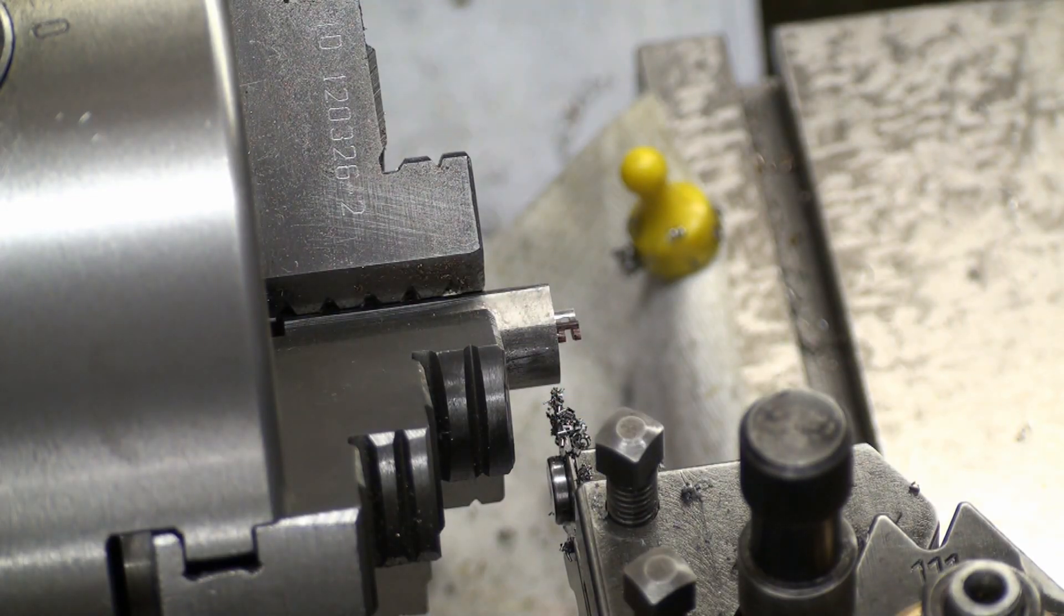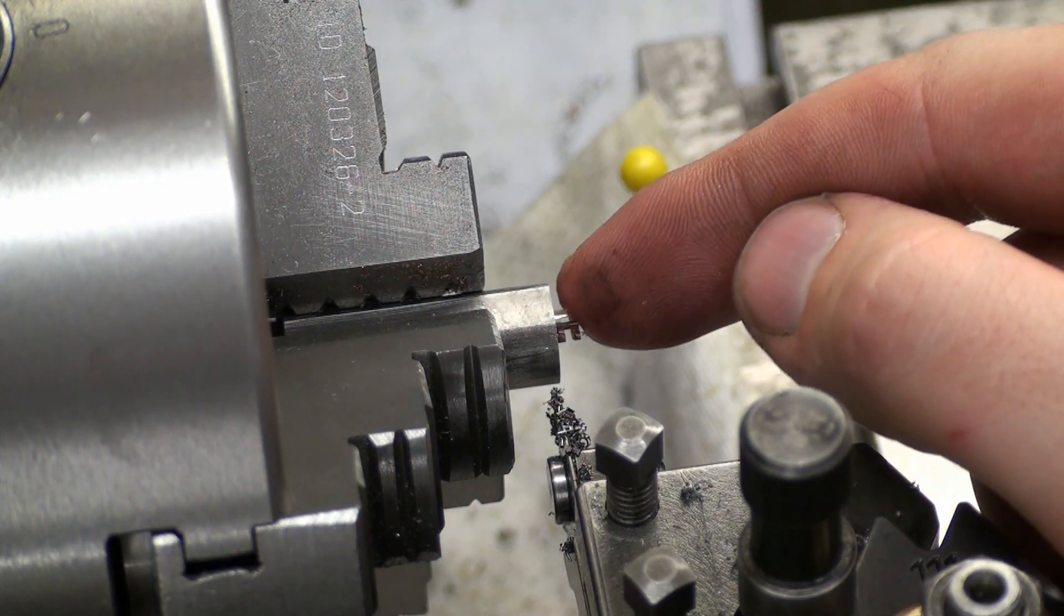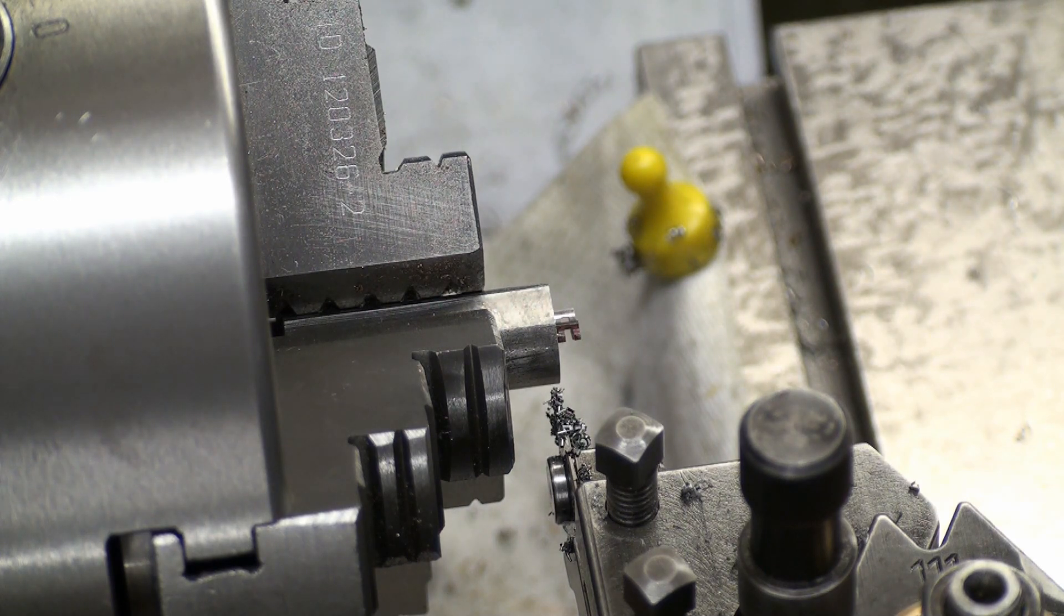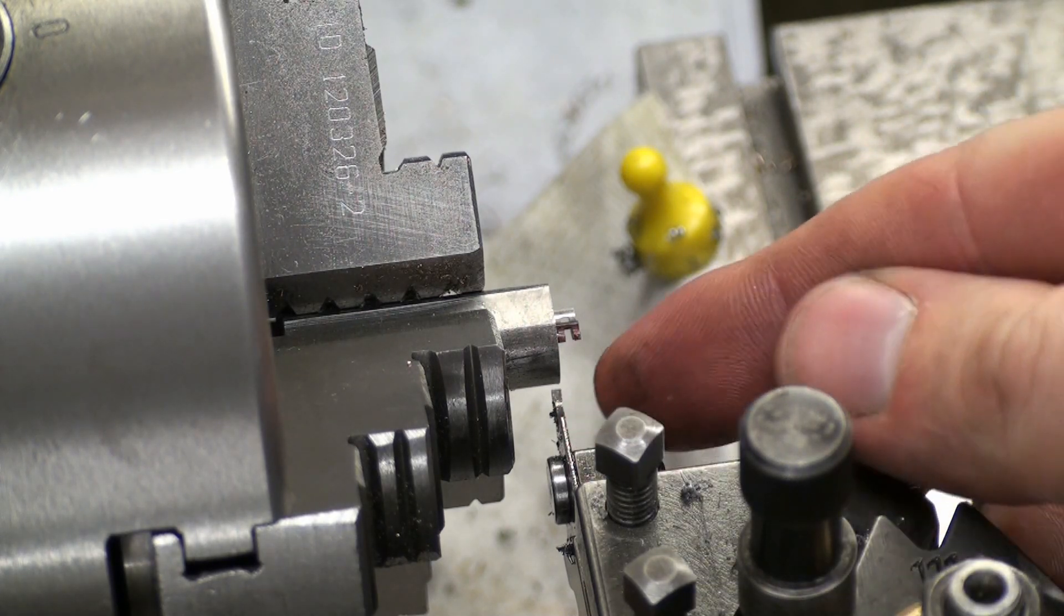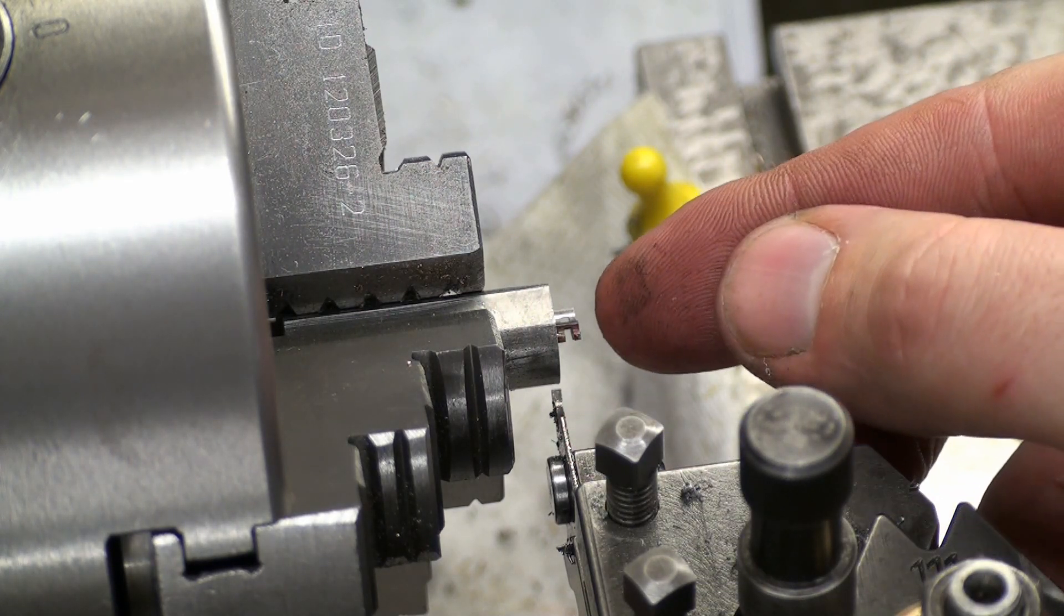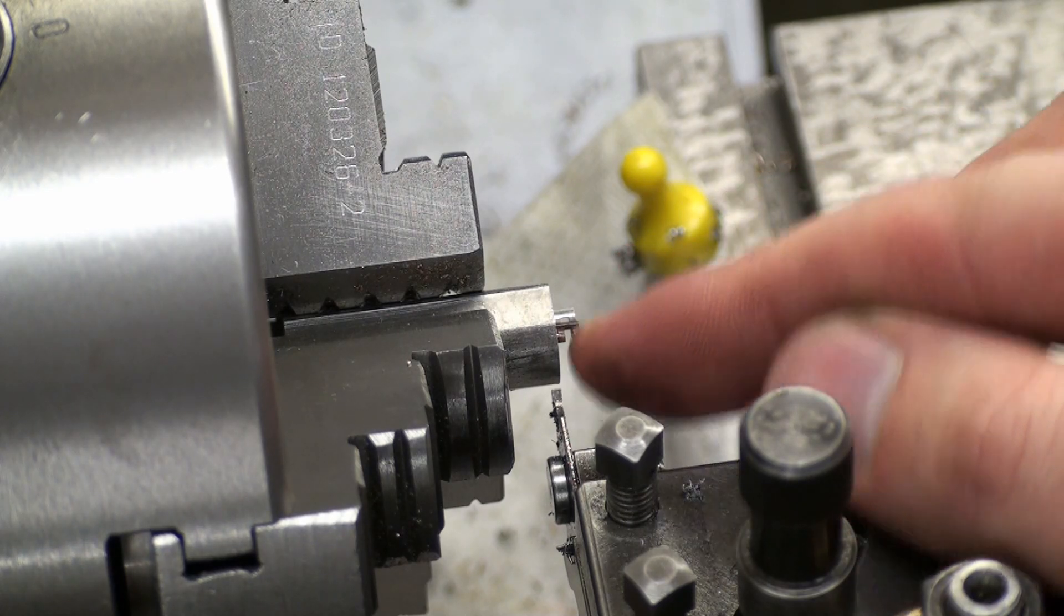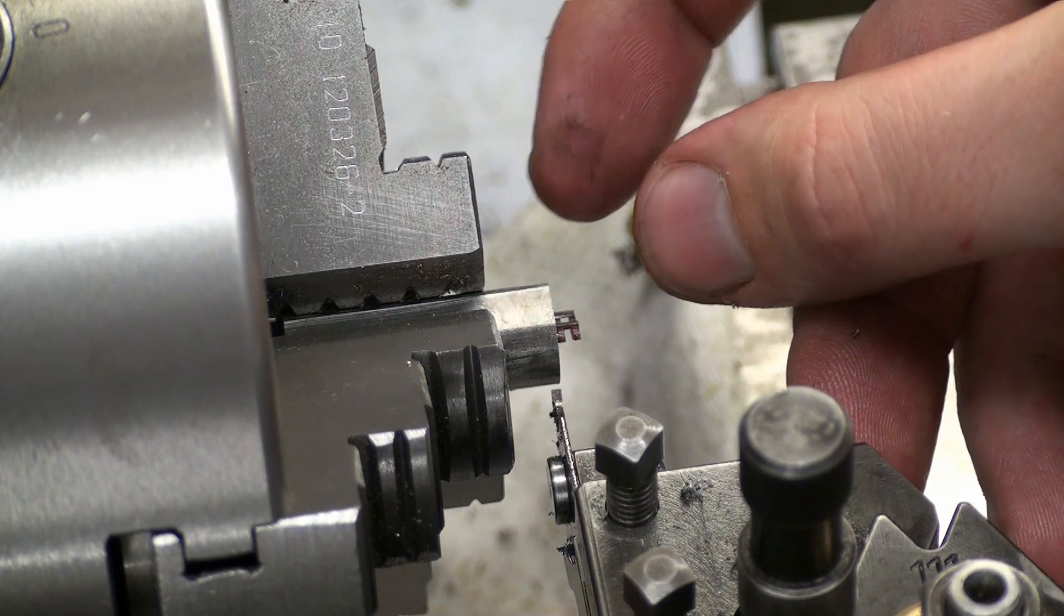This is going to be the last machining operation. We are over at the lathe. I've chucked up the part in the three-jaw chuck. I put a narrow carbide parting tool in it, and I'm going to touch off on the front face, move in the thickness of my parting blade plus the final thickness of the part, and part it off.